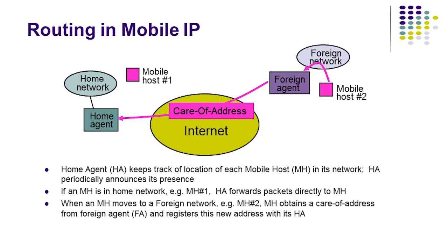A home agent keeps track of the location of each mobile host in its network. The home agent periodically announces its presence and manages all mobile hosts in its home network that use the same address prefix. If a mobile host is in the home network — for example, mobile host number one — the home agent forwards packets directly to the mobile host.